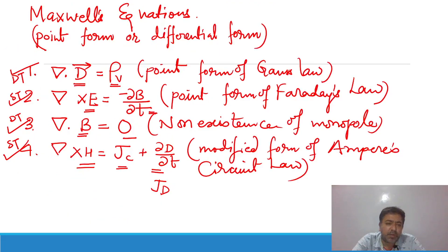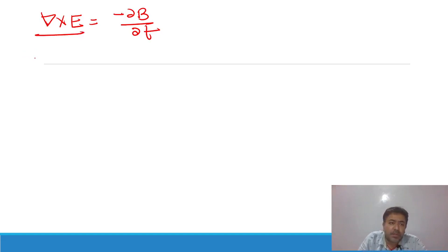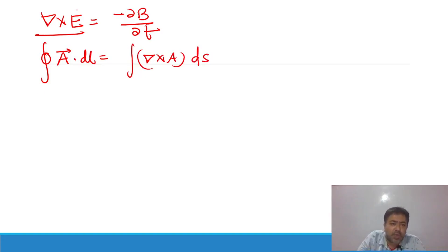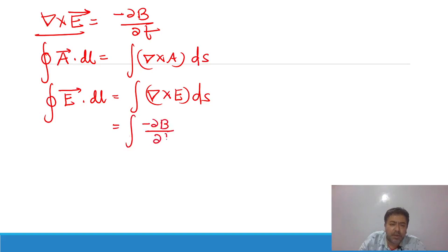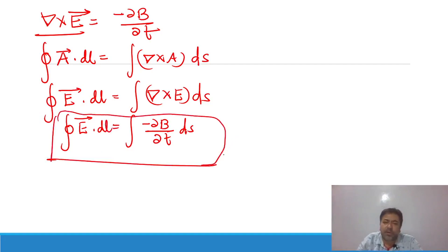The second Maxwell equation is ∇×E = −∂B/∂t. Since the curl operation is involved, we apply Stokes' theorem. Stokes' theorem states that the closed line integral of any vector equals the surface integral of the curl of that vector. Applying it for vector E: ∮E·dL = ∫(∇×E)·dS = ∫(−∂B/∂t)·dS. This is the integral form of the second Maxwell equation.